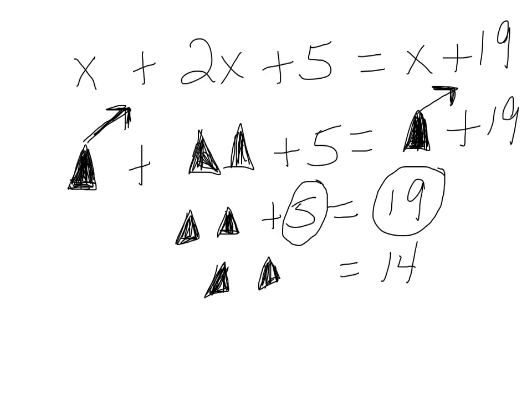Every time you eliminate something, you write the new step without it. So 2x's are equal to 14, so that means 1x is equal to 7. Okay? There was a lot there, but take a look at that, give it some thought, and see how you do. Good luck.